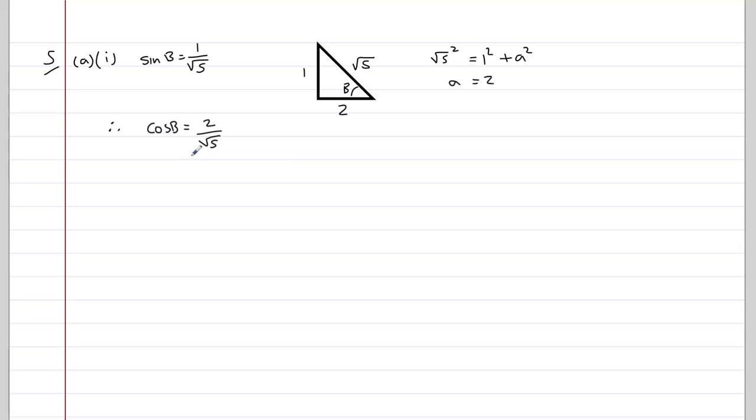Now, if this wasn't an acute angle like it's given in the question, we'd also have to consider the shape of the graph, because it could be positive or negative, but sine, cos, and tan are all positive between 0 and 90, so the answer here has to be positive.